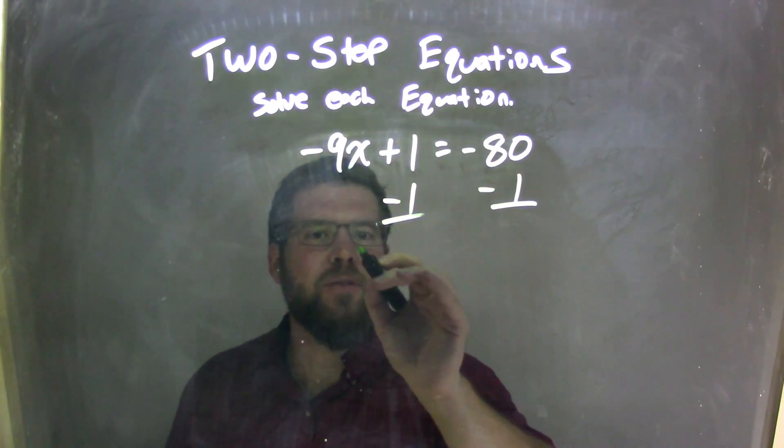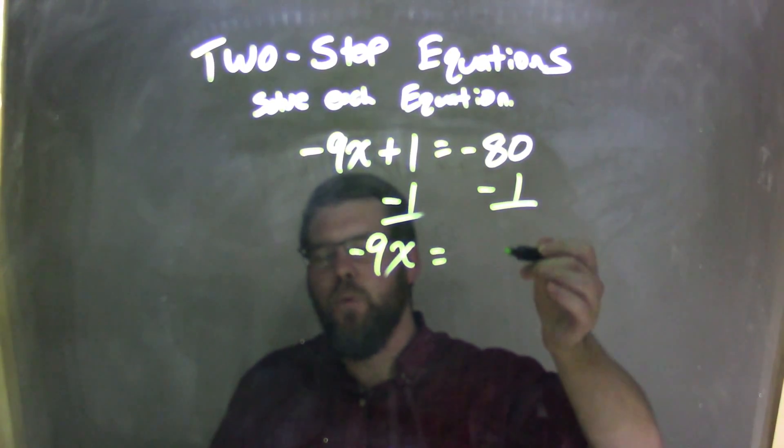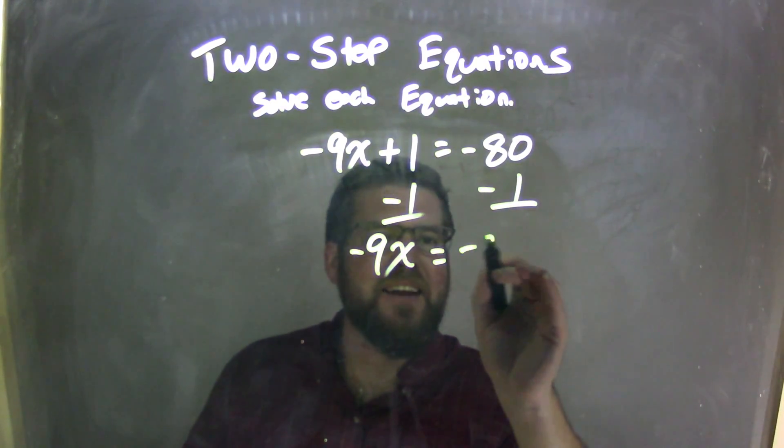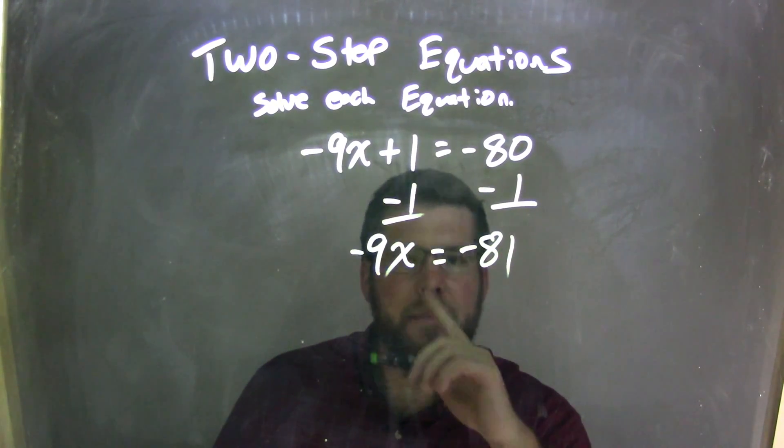The ones cancel, leaving me with negative 9x on the left equals negative 80 minus 1, be careful, is negative 81. It's not negative 79, it's negative 81. Be careful with that.